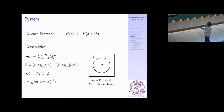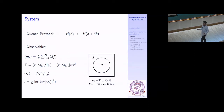What I mean by time reversal is the following: we take a system in some initial condition, evolve it for some time t, and then we want to do a time reversal, which in this case is achieved simply by reversing the Hamiltonian — replacing H with minus H.